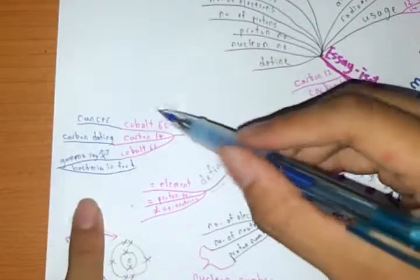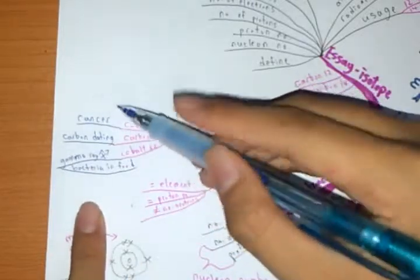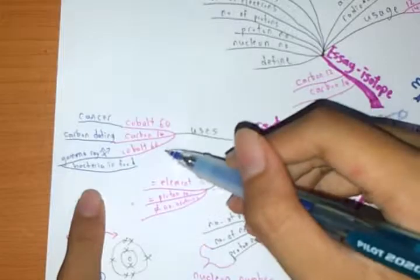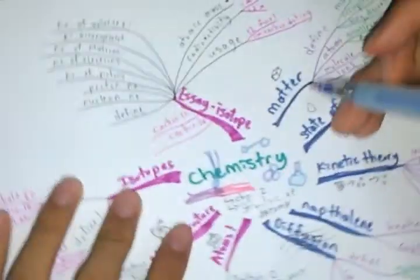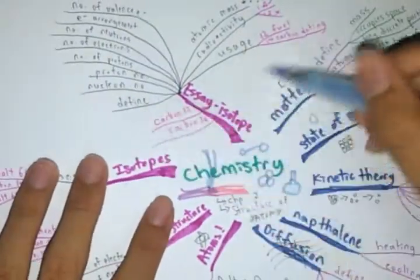It's basically Cobalt-60. It's used to fight cancer and then it can actually use gamma rays to kill the bacteria in the food. And next up is going to be the essays regarding it.